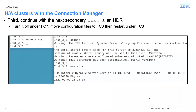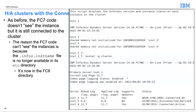Now migrate INST3, the HDR secondary: turn it off under FC7, copy all configuration files to FC8, and turn it back on. It comes back up and re-registers into the cluster. The FC7 code can't see it, but it is part of the cluster. ONSTAT -G cluster still shows INST1 as the primary with connections to INST3 and INST4.